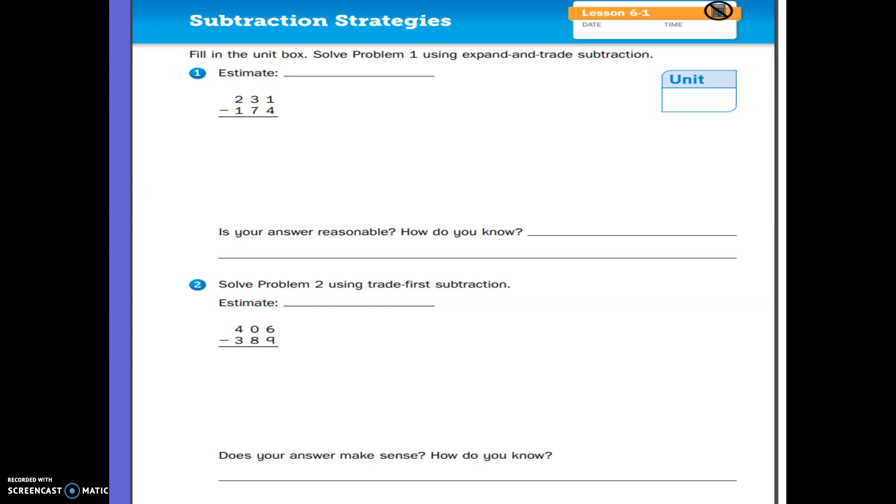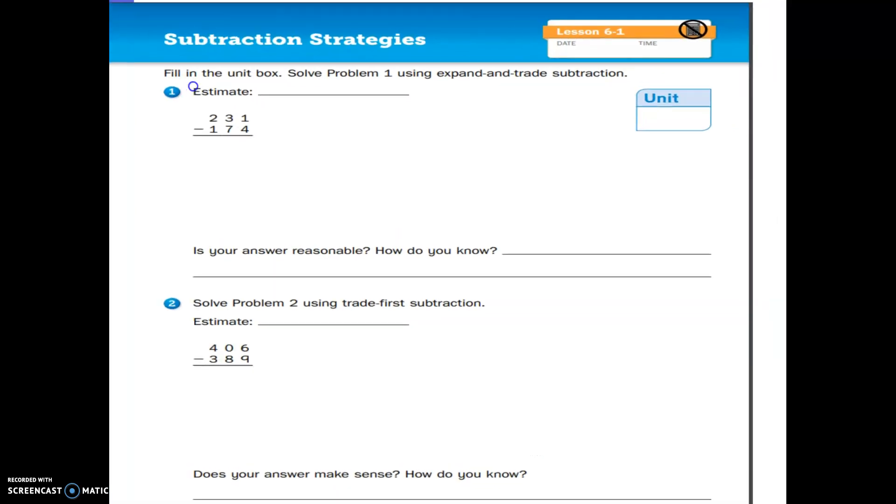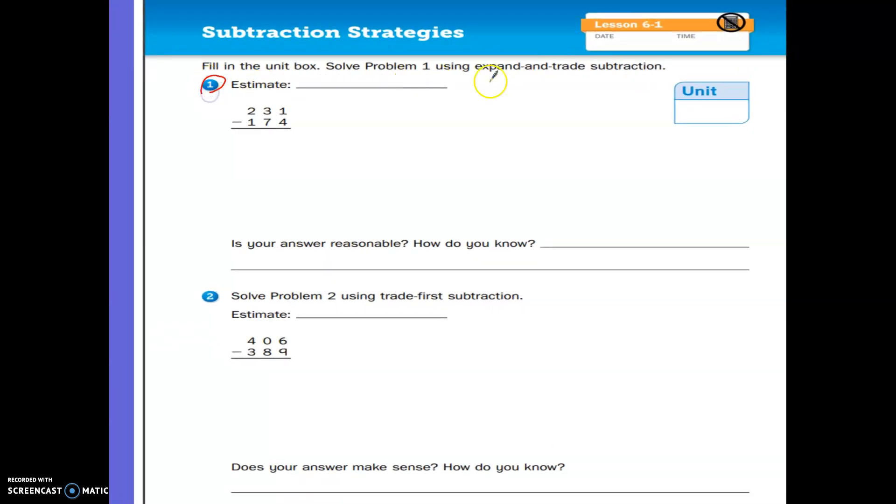So the first one that we're going to do on page 189, number one, in the first strategy, we're going to use the expand and trade subtraction. We've done it before, so it should hopefully come back to you. But first, with any problem, what we want to do is our estimation. So when we estimate the answer to this problem, we're going to take our numbers. We've got 231.